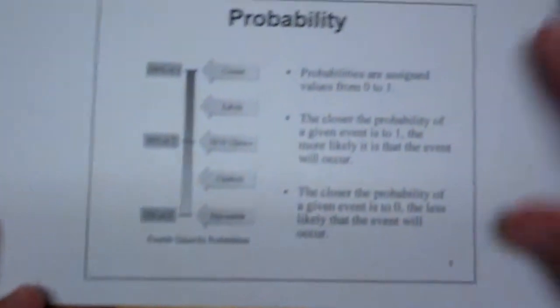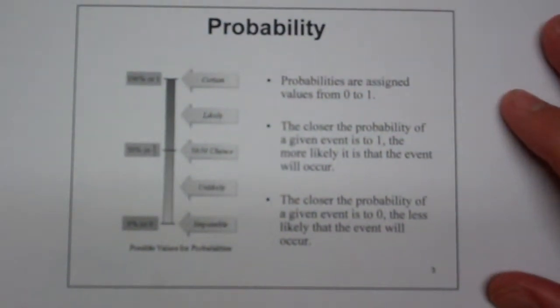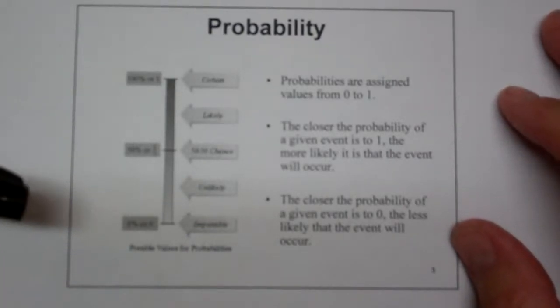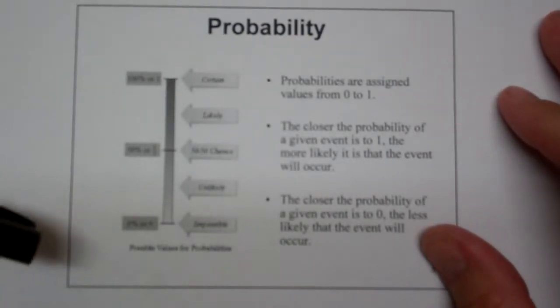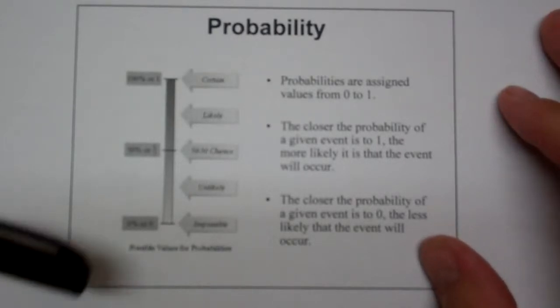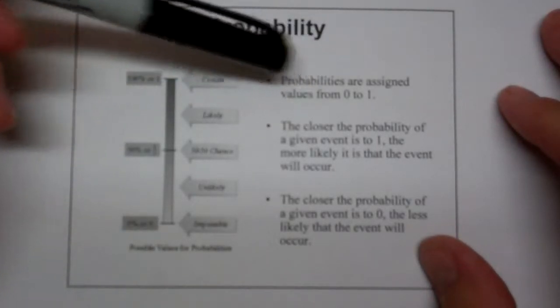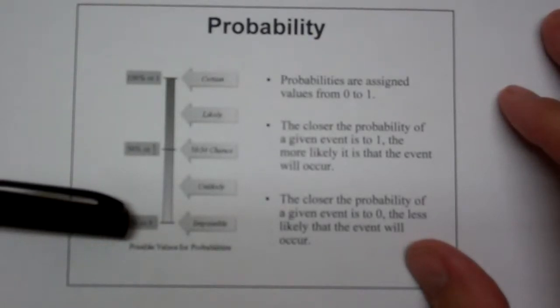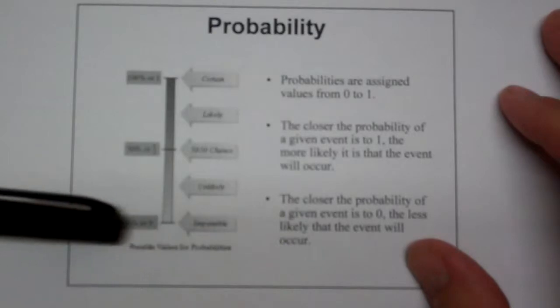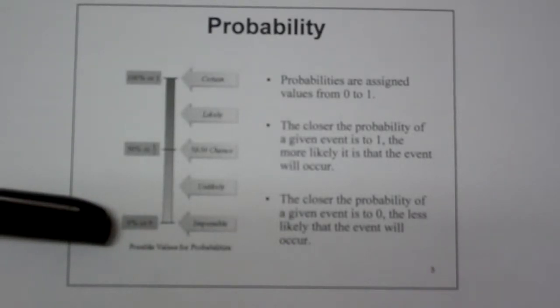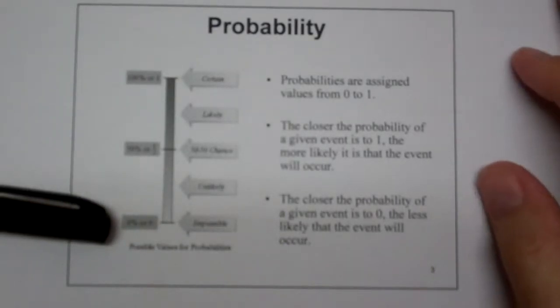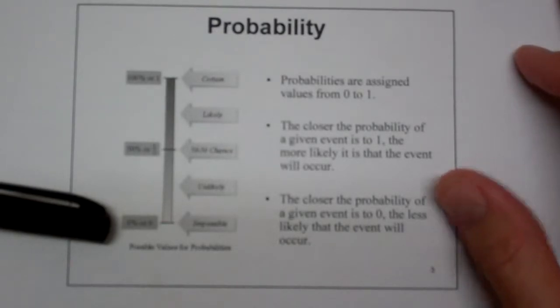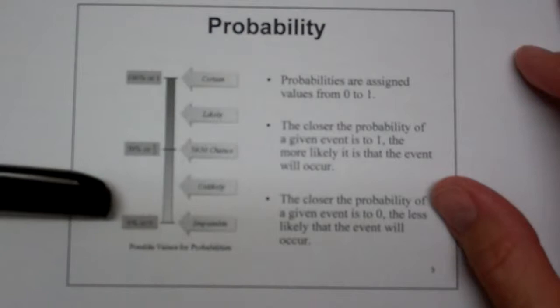So what is a probability? A probability is the likelihood that an event is going to occur. Probabilities are assigned values from zero to one. If you have a zero probability, that means it's impossible. The event cannot happen. So I jump up and do not come down. The probability of me jumping up and not coming down is zero, unless I jump onto something.